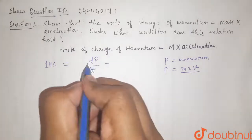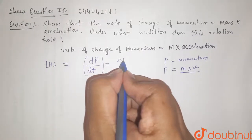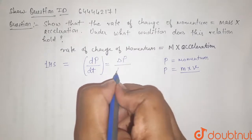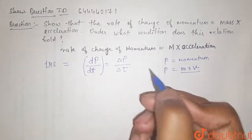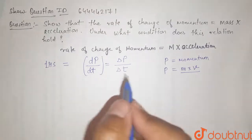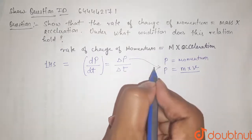So, this can also be written as delta p by delta t. So this is also the rate of change of momentum. Now, we can put the value of p from this equation.